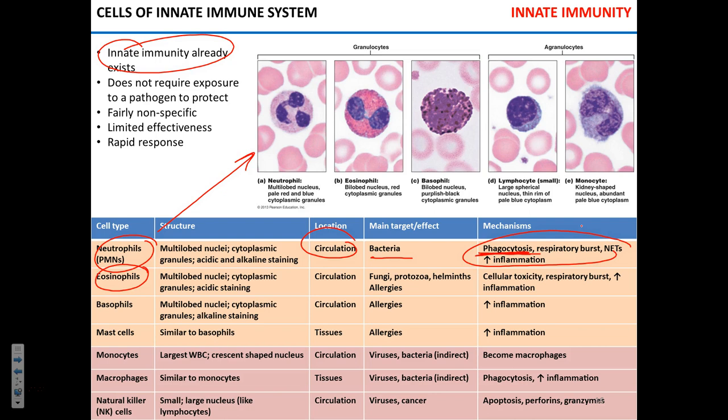Eosinophils are in circulation and respond to fungal infections, protozoan infections, and helminthic infections. Not every helminthic or fungal or protozoan infection will increase the number of eosinophils in the blood, but if you see high eosinophils in the blood you may suspect helminths, protozoa, or fungi. Eosinophils cannot phagocytose — they just release chemicals that are toxic to the invader, hoping it dies or leaves.